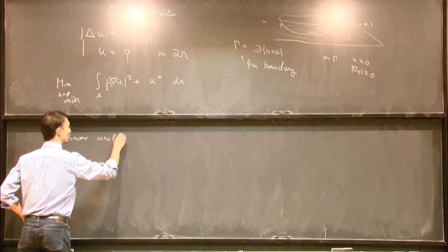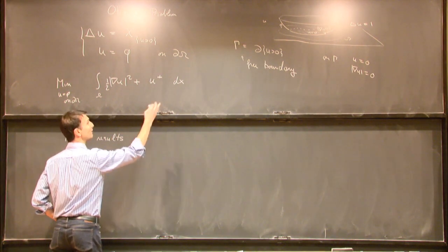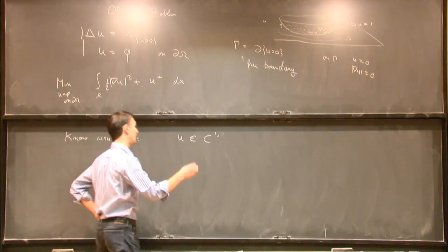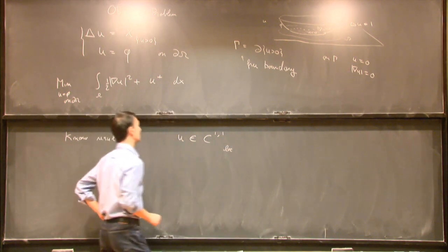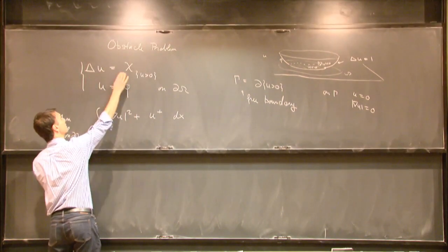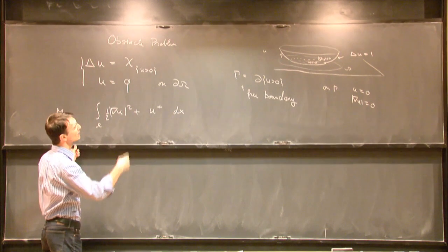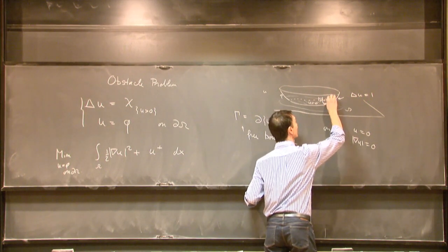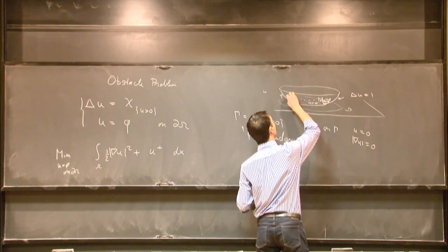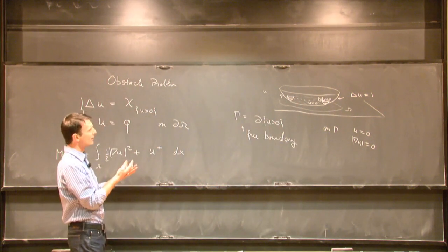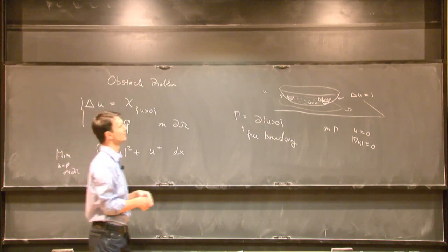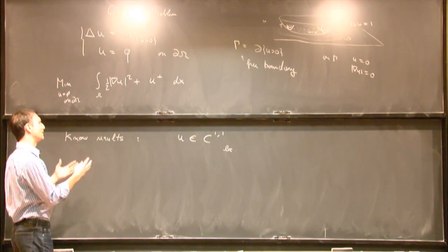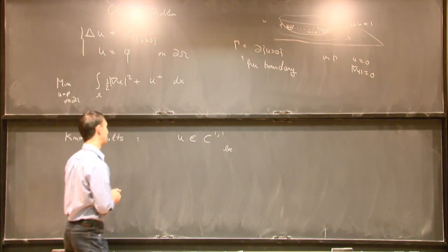The first known result: u is in fact of class C^{1,1} locally. This almost follows from the equation since Laplace of u is bounded. Using the maximum principle, one can show that on the zero level set a parabola can be placed above each point, meaning the function detaches from the obstacle at most quadratically. This is the optimal regularity.